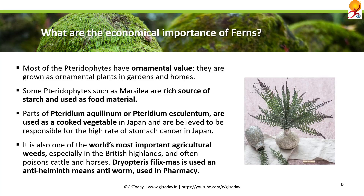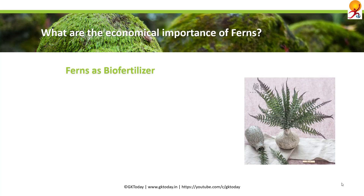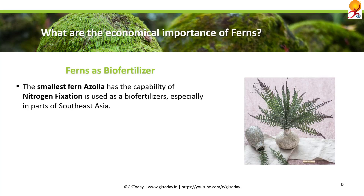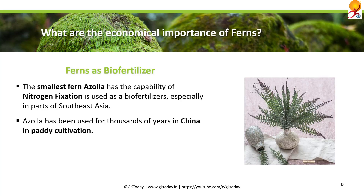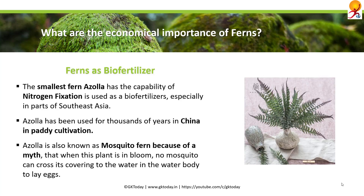Dryopteris filix-mas is used as an anthelmintic, meaning anti-worm, and is also used in pharmacies. Regarding ferns as biofertilizers: the smallest fern, Azolla, has the capability of nitrogen fixation and is used as a biofertilizer, especially in parts of Southeast Asia. Azolla has been used for thousands of years in China in paddy cultivation. It is also known as the mosquito fern due to a myth that when this plant is in bloom, no mosquito can cross its covering to lay eggs in the water body — though this is a myth and not yet proven.